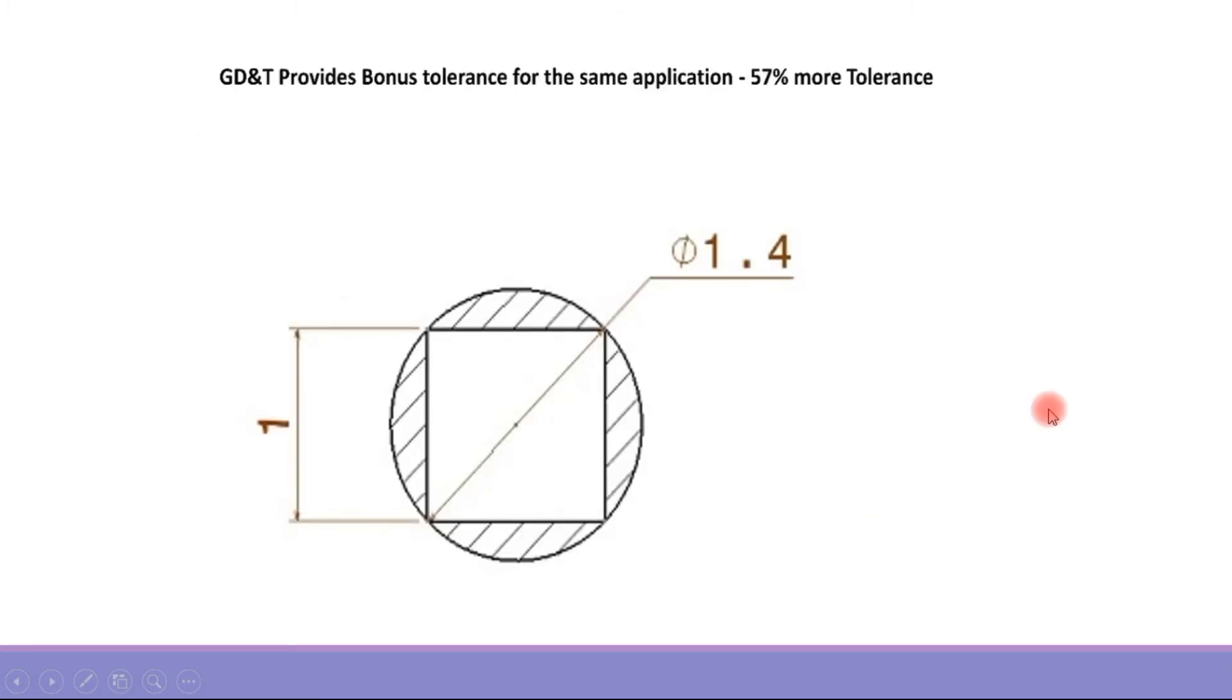If we compare the area between the two tolerance zones, and if we inscribe the square inside the circle of the geometric tolerance zone, then we can see that the hashed area is the extra tolerance which is available for the GD&T drawing.